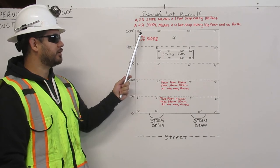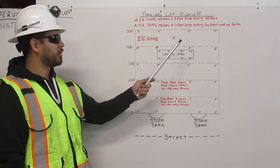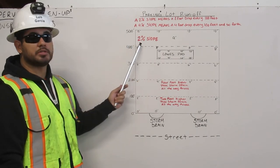And at 500 feet, we're going to make it 10 feet higher than the storm drain all the way across. This makes it a 2% slope.